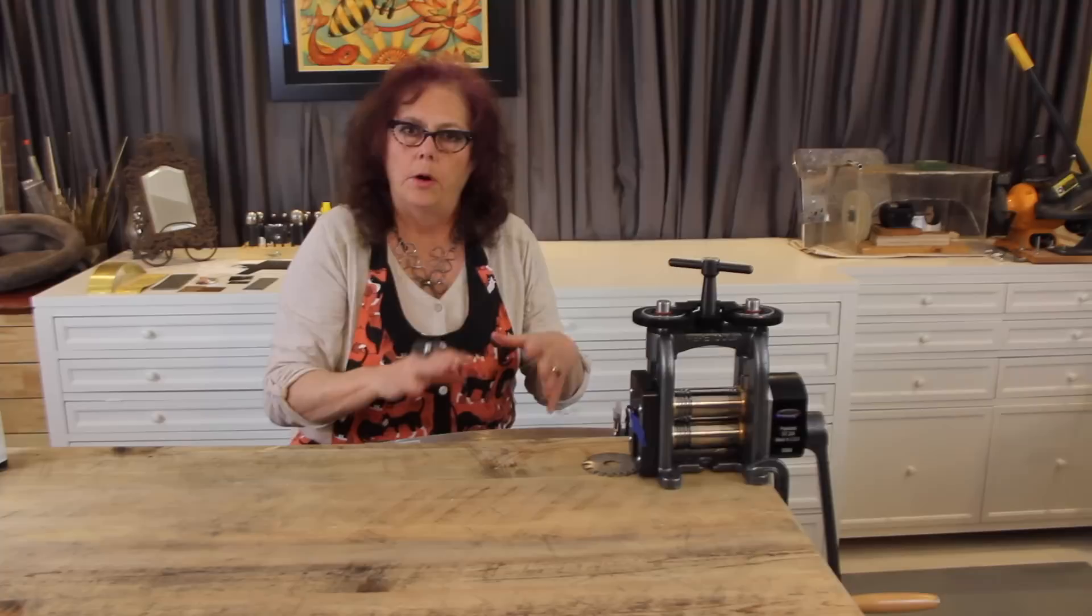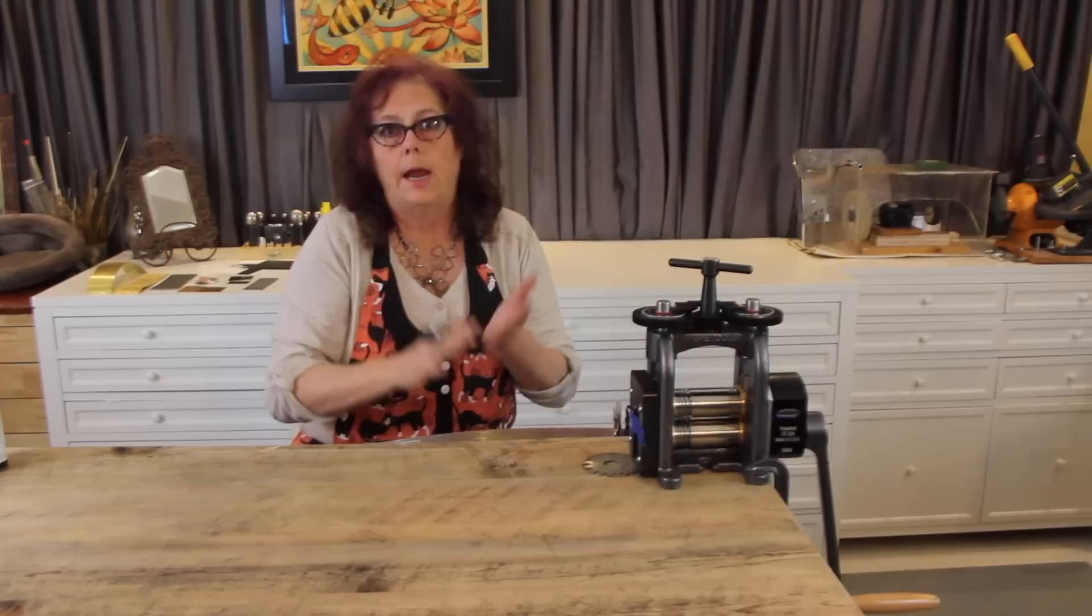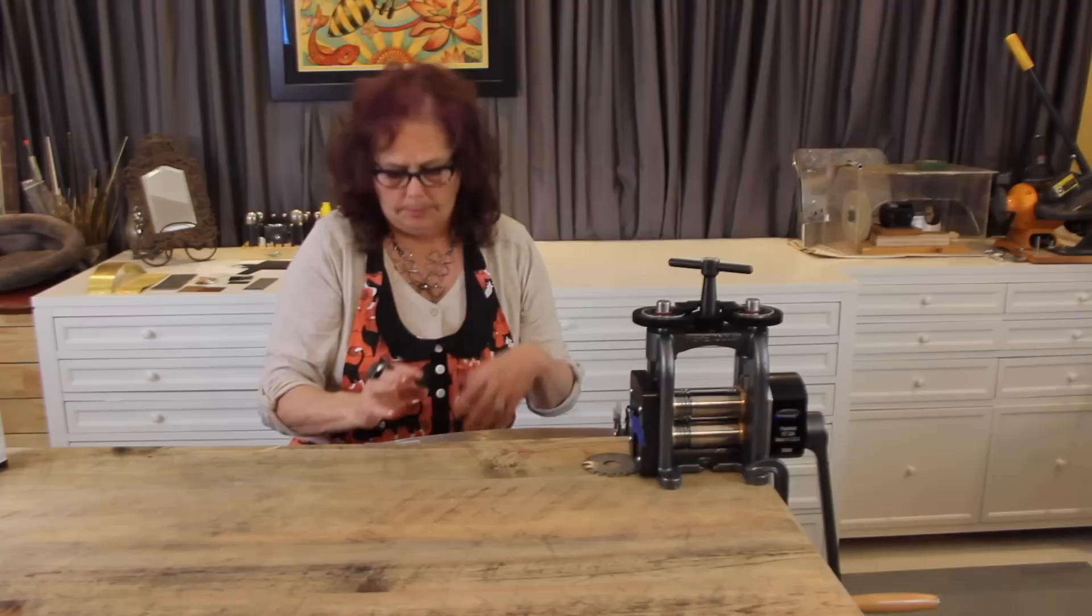If you're using steel with any rolling mill, you want to make sure that you've got a sandwich. I usually use two pieces of brass above and below. Make sure that whatever you're rolling fits inside of the sandwich that you've made. That way the steel won't damage your rollers. Another thing you never want is any kind of moisture in here. If you're annealing and then pickling, dry it and let it sit down for a few minutes.